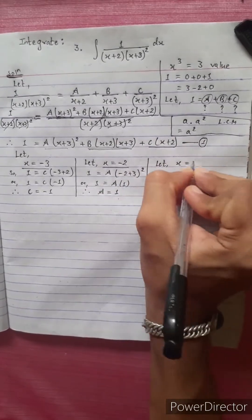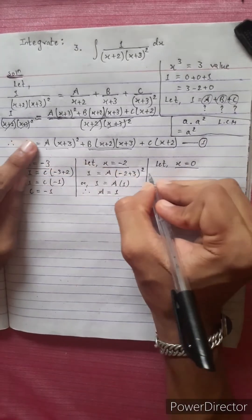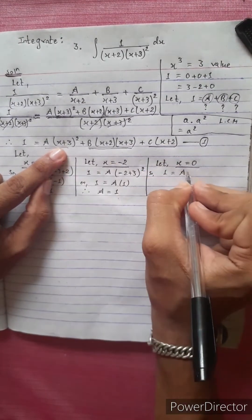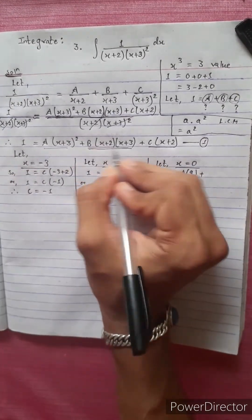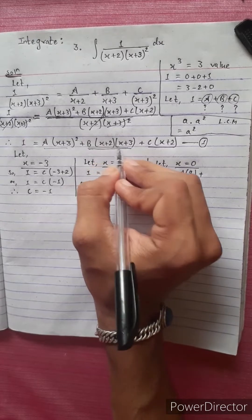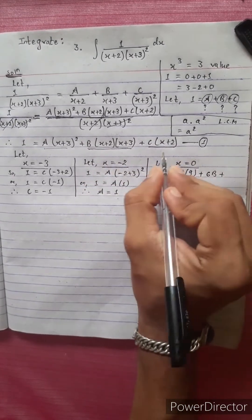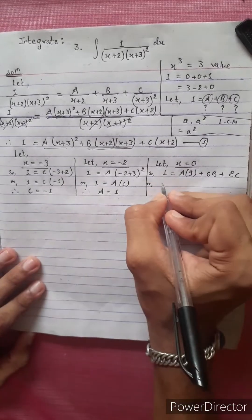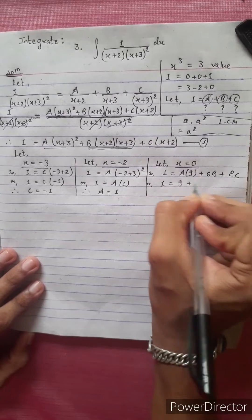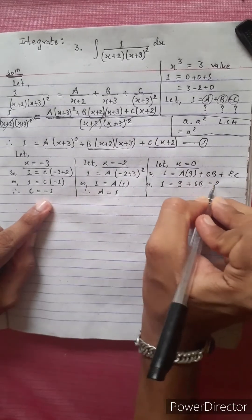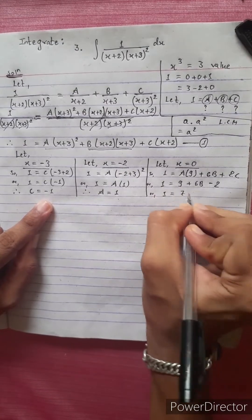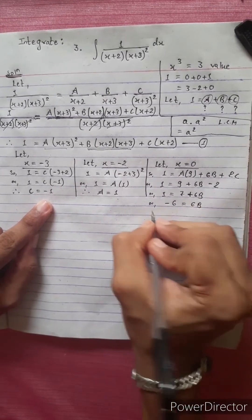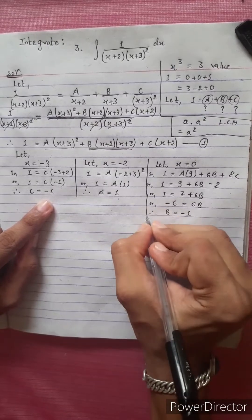Let x equal 0. Then 1 equals A times 3 squared plus B times 2 times 3 plus C times 2. That is 1 equals 9A plus 6B plus 2C. Substituting A equals 1 and C equals minus 1, we get 1 equals 9 plus 6B minus 2, so 1 equals 7 plus 6B. Therefore minus 6 equals 6B, so B equals minus 1.